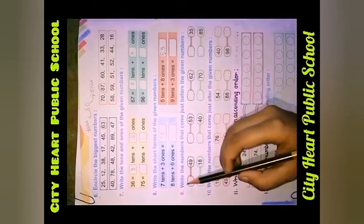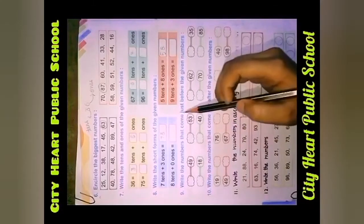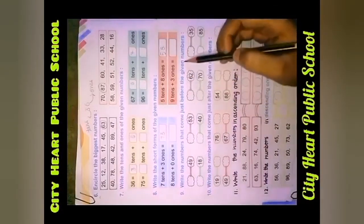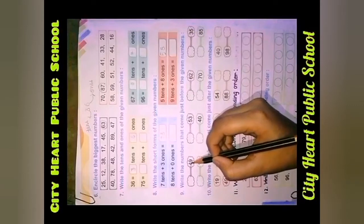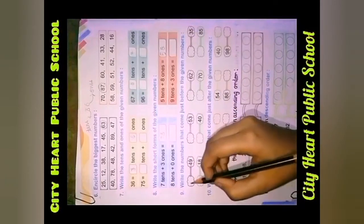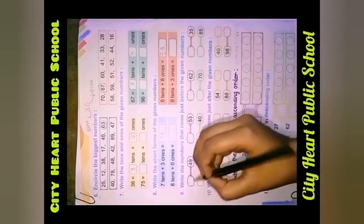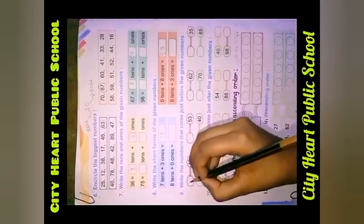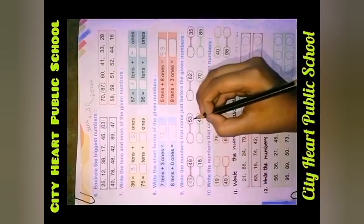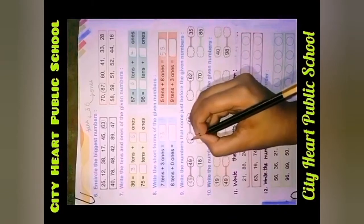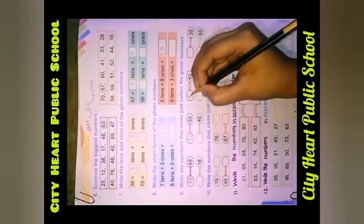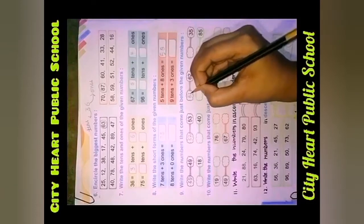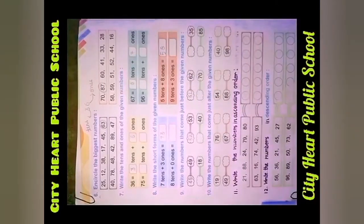Coming to question number 9: Write the number that comes just before the given numbers. Aapko yeh karna hai — 49 ke just pehle jo number aata hai, use ismai likhna hai. Like 49 ke just pehle kya aata hai? Forty eight. Fifty three ke just pehle kya aata hai? Fifty two. Sixty two ke just pehle kya aata hai? Sixty one. Aapko aisi likhna hai.